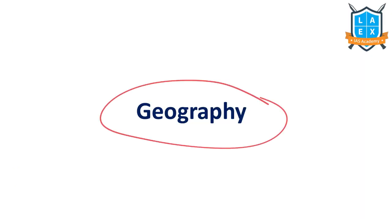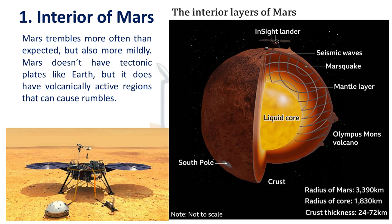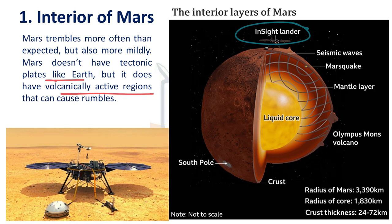Next, let us discuss geography related issues. The first issue is the interior of Mars. Mars, similar to Earth, is a terrestrial planet. It has three layers: crust, mantle, and core. InSight Lander was sent by NASA to study the interior of Mars. According to this, the Mars planet experiences Mars quakes similar to earthquakes — these are seismic waves. According to the study of these Mars quakes, Mars doesn't have tectonic plates like Earth, but it has volcanically active regions. Through these volcanically active regions, when volcanic eruptions happen, it trembles, leading to Mars quakes.